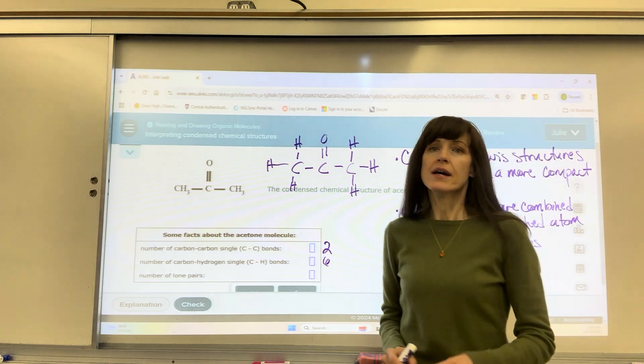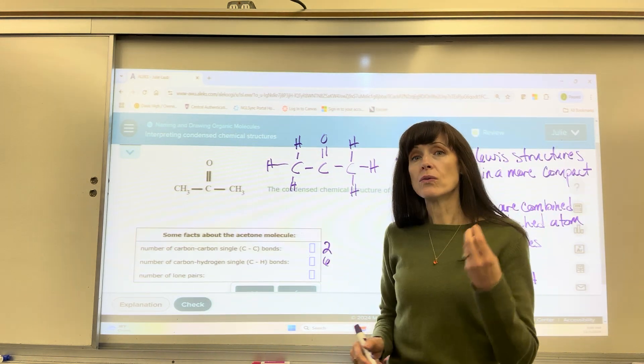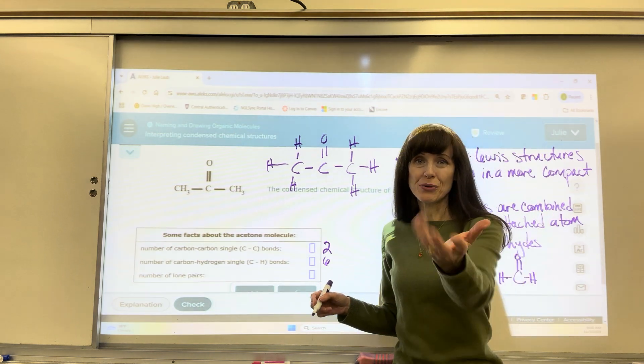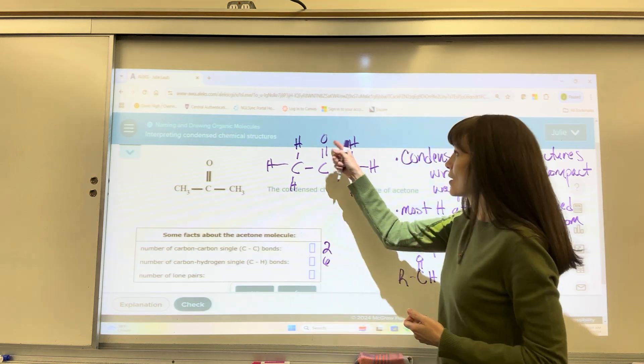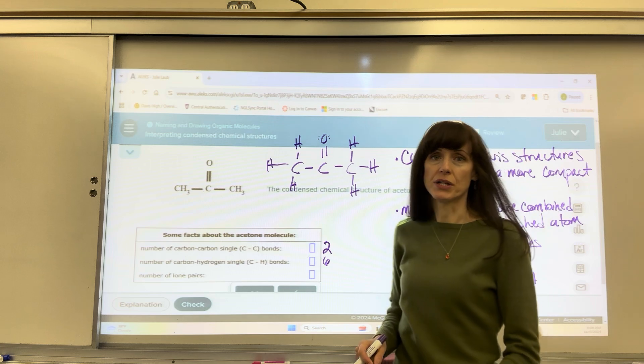Lastly, lone pairs. Another time save, super small time save. We don't write the lone pairs. They're understood to be there. You just have to know how many lone pairs there are. I look at oxygen. Yes, there are two lone pairs on oxygen.